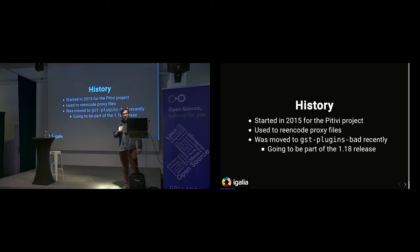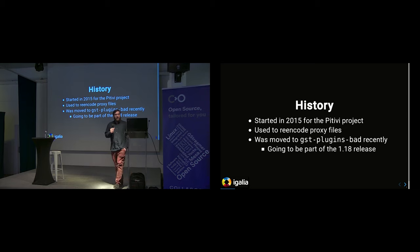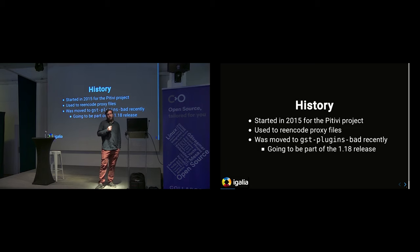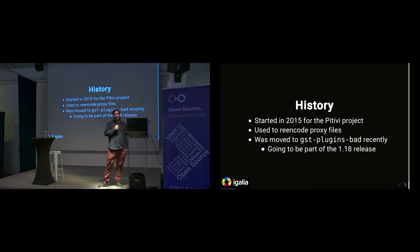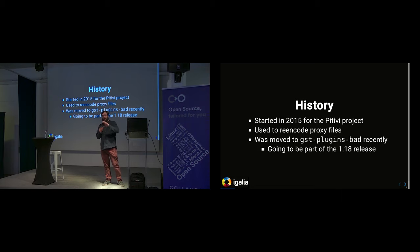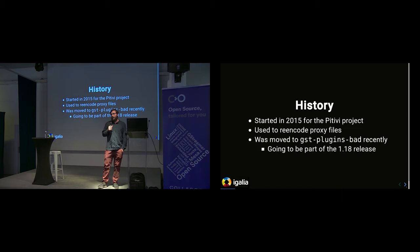A little bit of history about the project: we started it in 2015 for the PTV project. The main goal was to make an API to easily transcode media files to proxy files. Proxies are a version of the assets with the right codecs for video editing — so you import your media files in PTV and it will transcode them to a format that can be properly used for video editing.